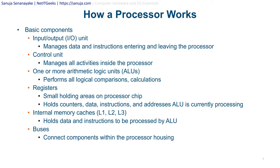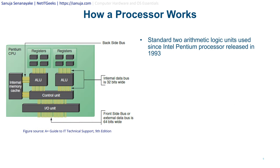Internal memory caches — typically L1, L2, and L3 — hold data and instructions to be processed by the ALU. Buses connect components within the processor housing, and the buses on the motherboard interact with the buses inside the processor as well. A standard two-ALU design has been used since the Intel Pentium processor released in 1993.